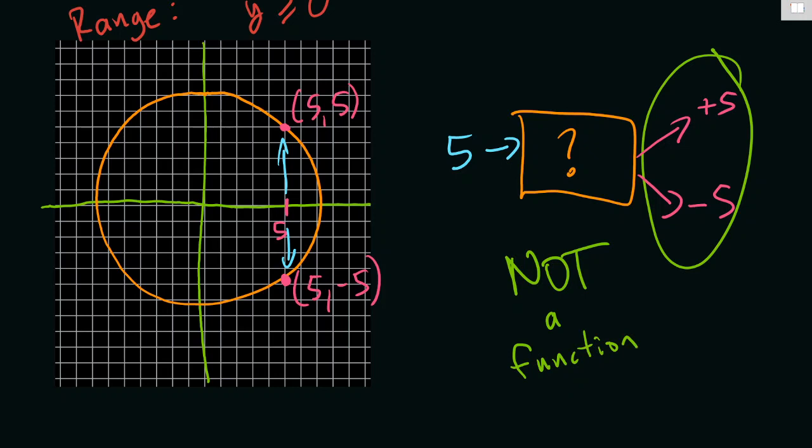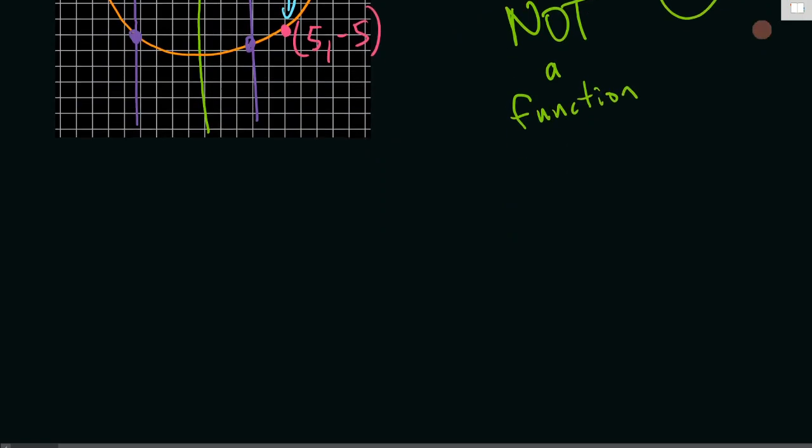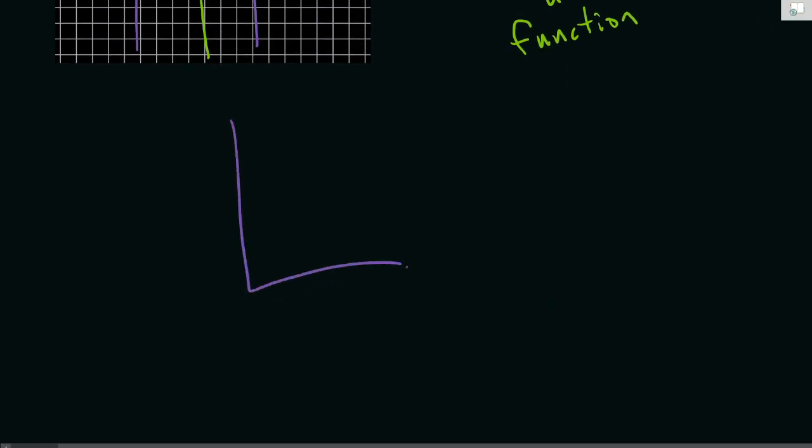And this is something called the vertical line test. If you can draw a vertical line through your relation and it goes through two points, then it's not a function. So anywhere here, if I draw a vertical line it goes through two points, not a function. Versus our first example, which was just a straight line. If I draw a vertical line anywhere on a straight line, doesn't matter where it is, I'm only ever going to get one point, and so that's why our pay f of x, the one we had above, 10x, is a function.